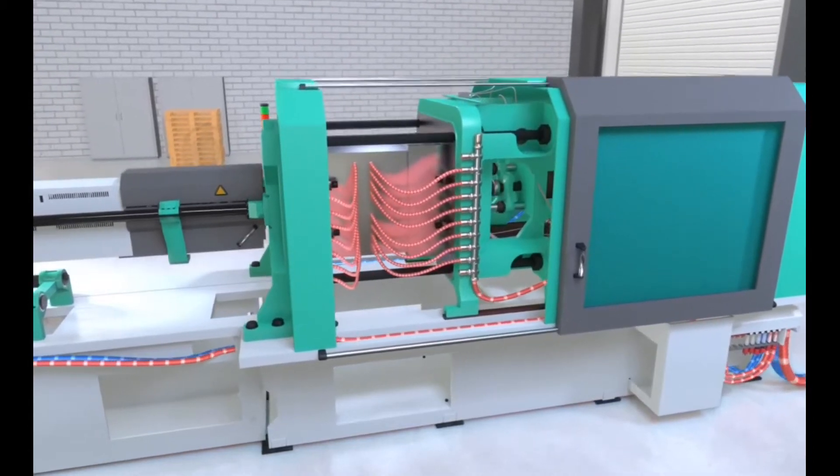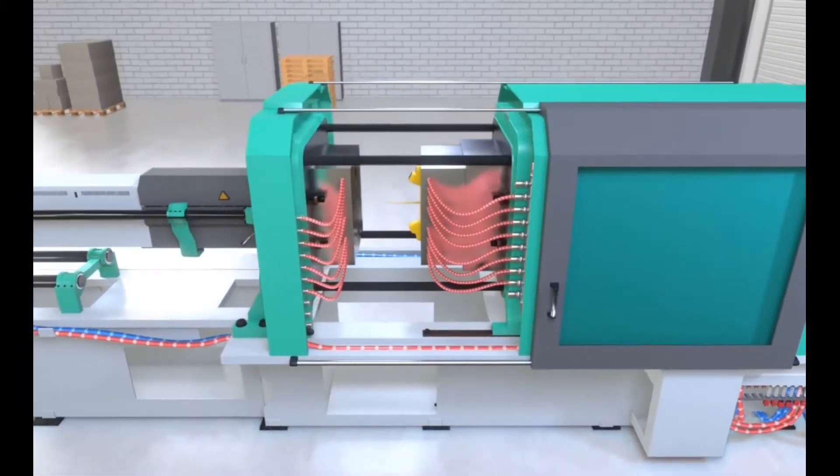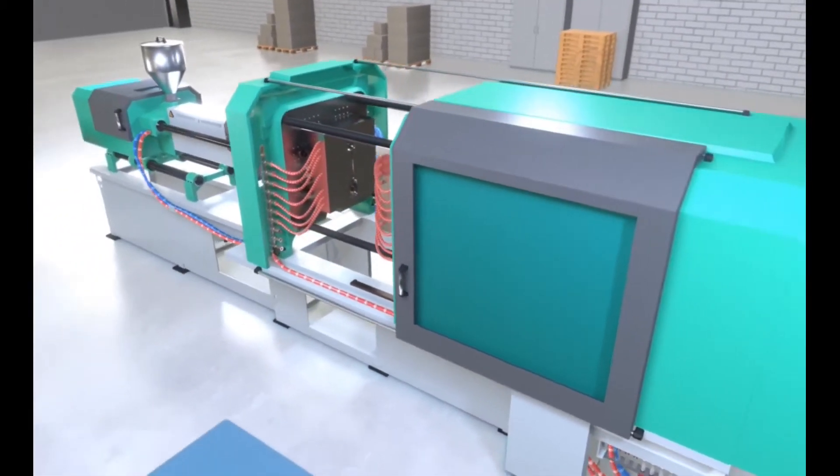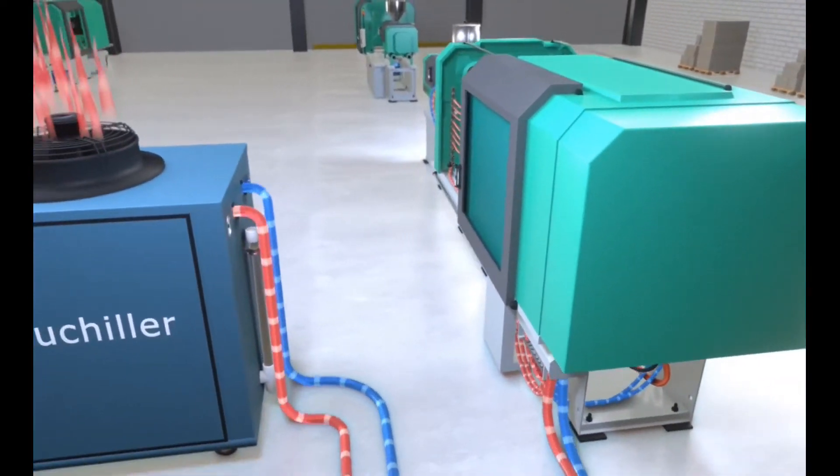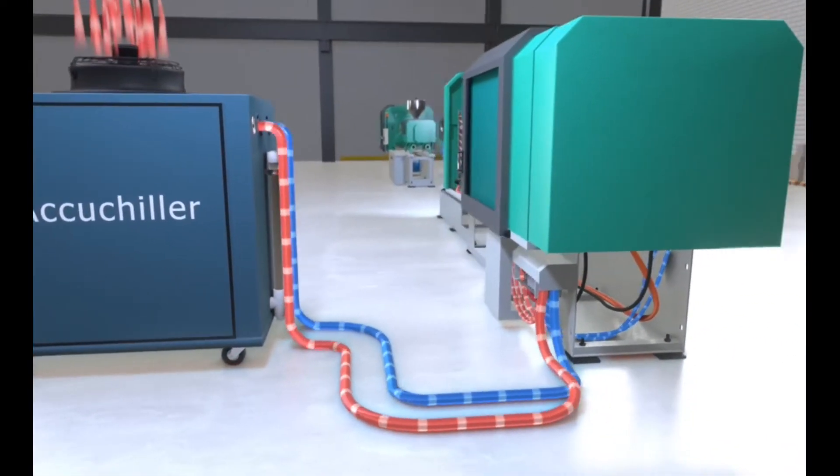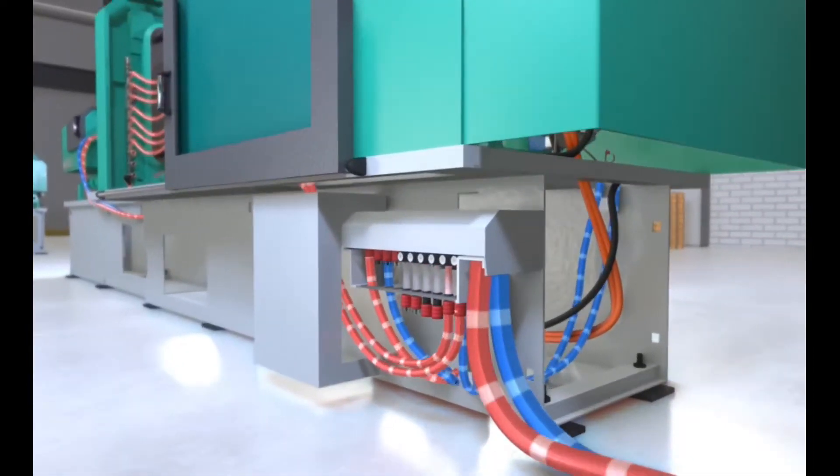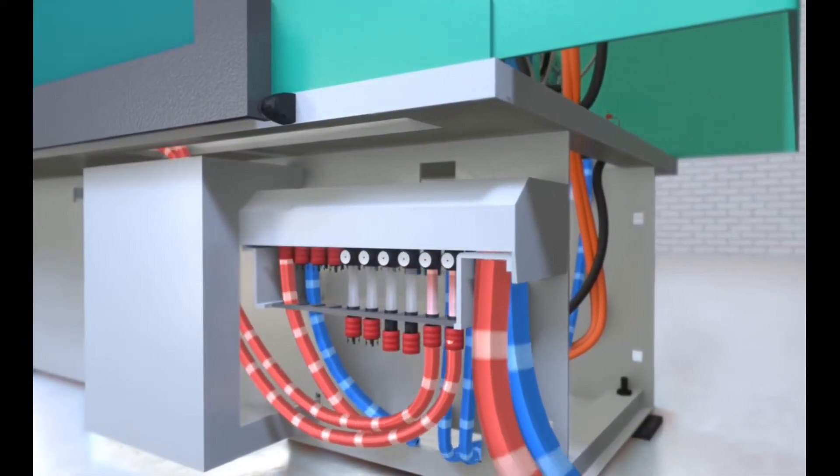Depending on the overall cooling requirements of the mold, individual water line setups will be determined, from the number of lines to the sizes of the supply lines from the temperature control unit to the mold water distribution manifold.